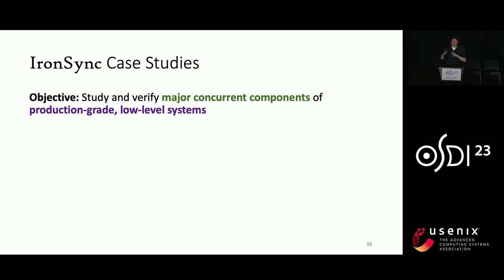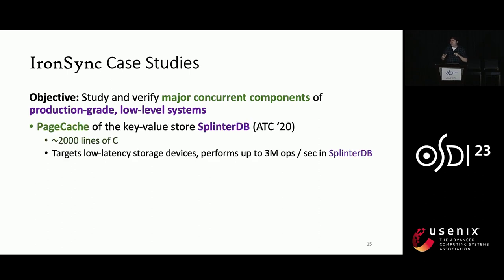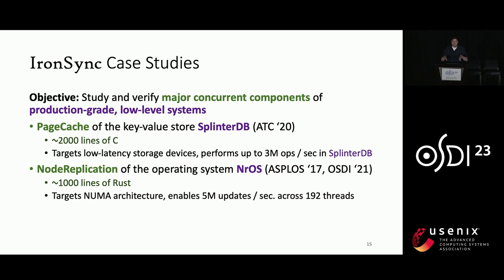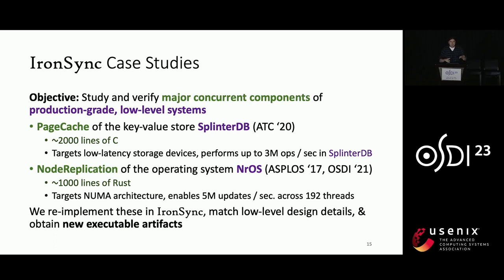As evidence that this is good enough to verify realistic systems, we apply IronSync to two case studies, each a major concurrent component of some production-grade low-level system. The first is a page cache, which is a component of the key-value store SplinterDB that manages the DB's access to a storage device. The second is node replication, a core algorithm at the center of an operating system called NROS, optimized for NUMA architecture, which handles many of the core data structures of NROS. Both are highly parallel systems capable of performing millions of operations per second. We re-implement them in IronSync, matching all the crucial low-level design details to obtain new executable artifacts that are verified.